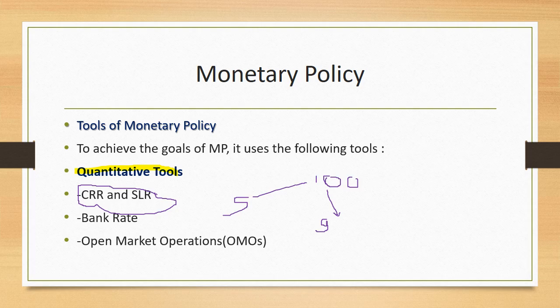With a cash reserve ratio of 5%, the bank collects deposits and keeps that percentage with the central bank. If CRR is raised to 10%, then 95 rupees out of 100 can be lent. CRR is related to SLR — the Statutory Liquidity Ratio.